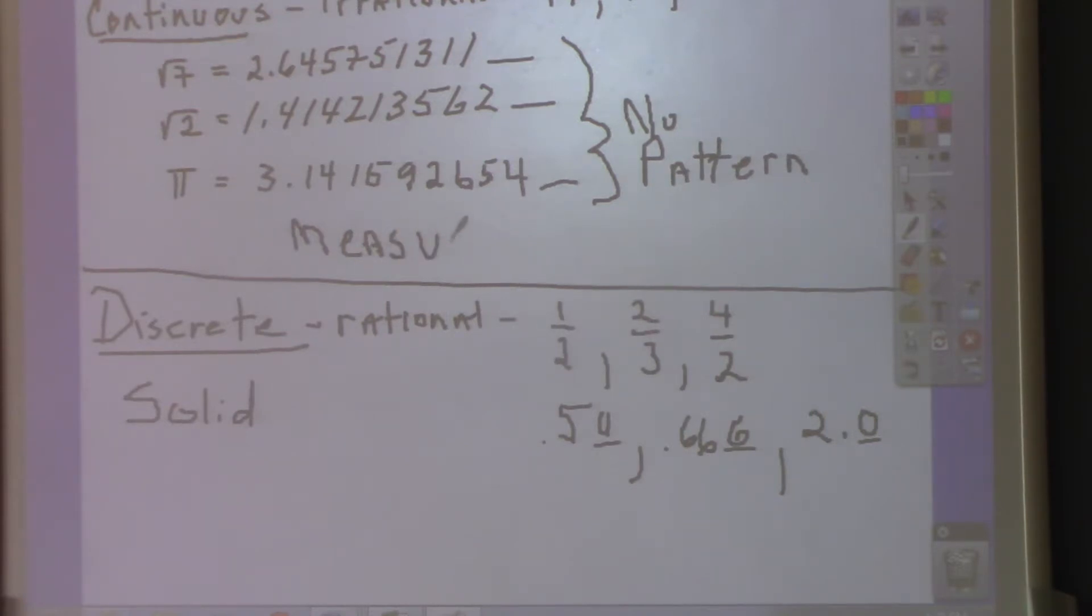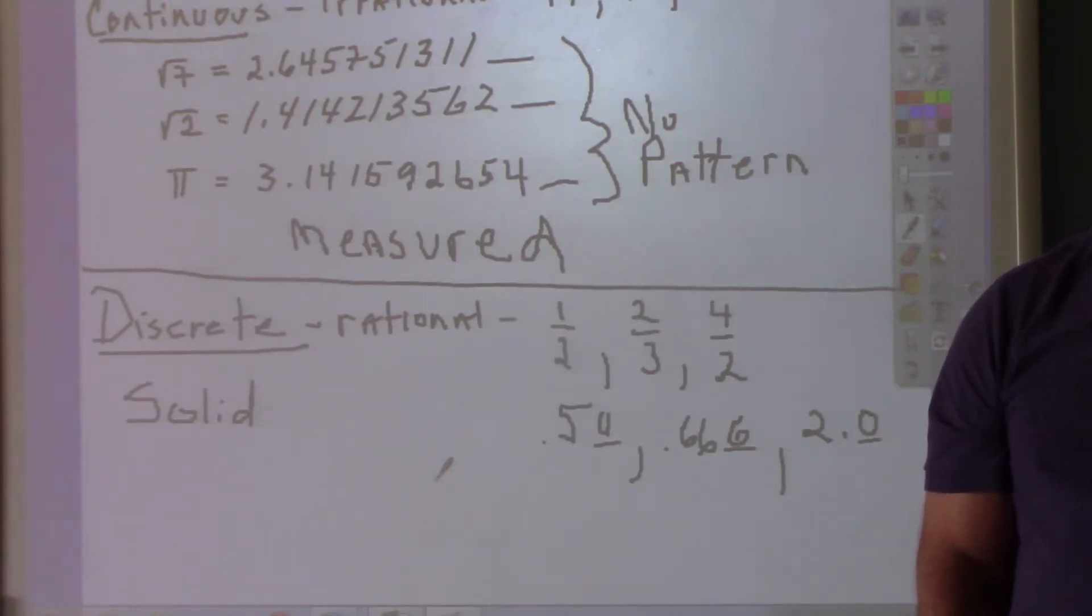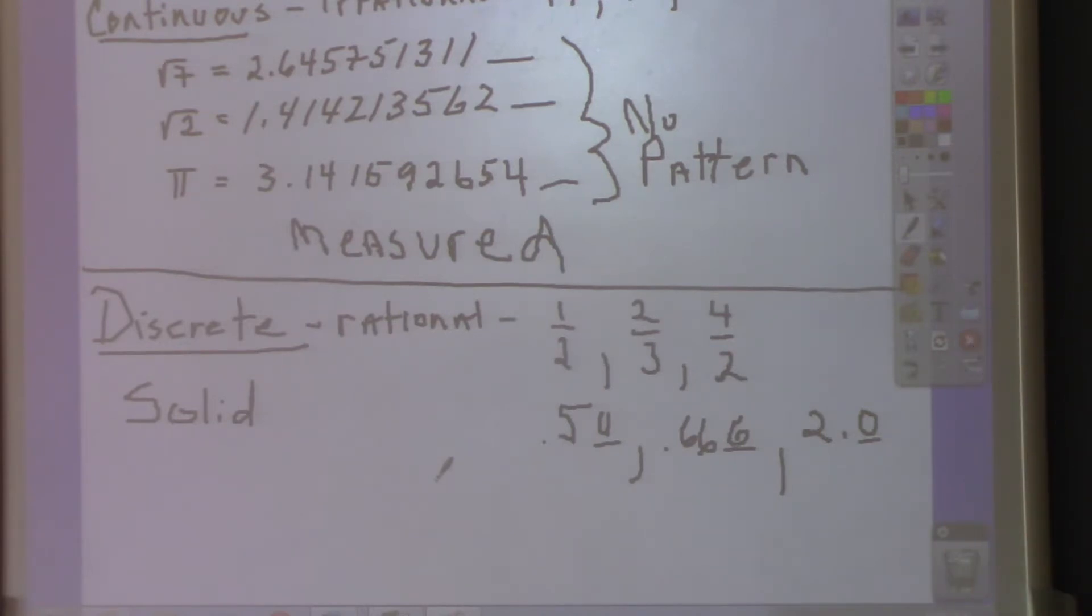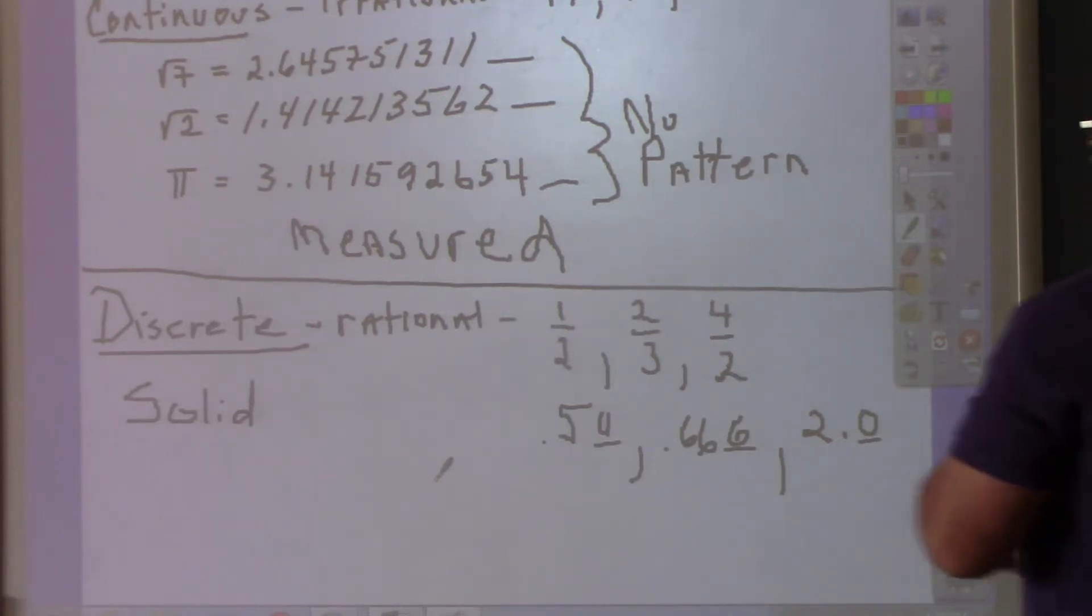So what word did I use with all of that? Measurement. So anything measured is going to be what? Continuous. Now tell me what's measured. Height. Weight. Width. Length. Volume. Get the point? Anything having to do with measurements is continuous because you might read two and three quarter cups. You may read two and a half cups. You can't be exact.